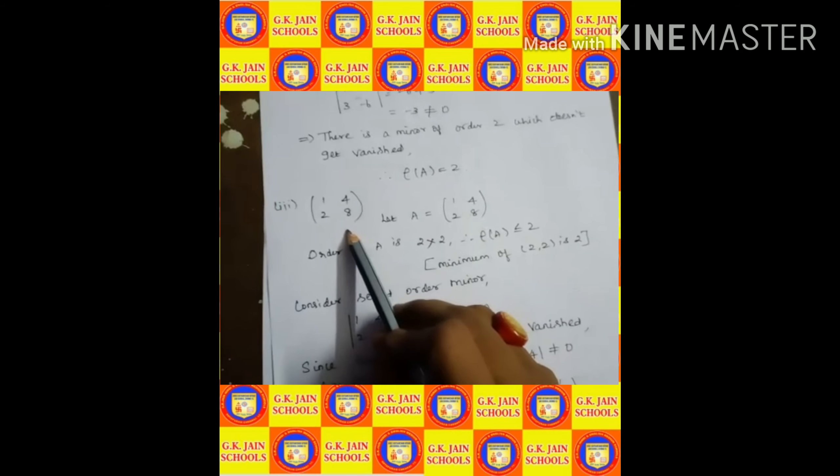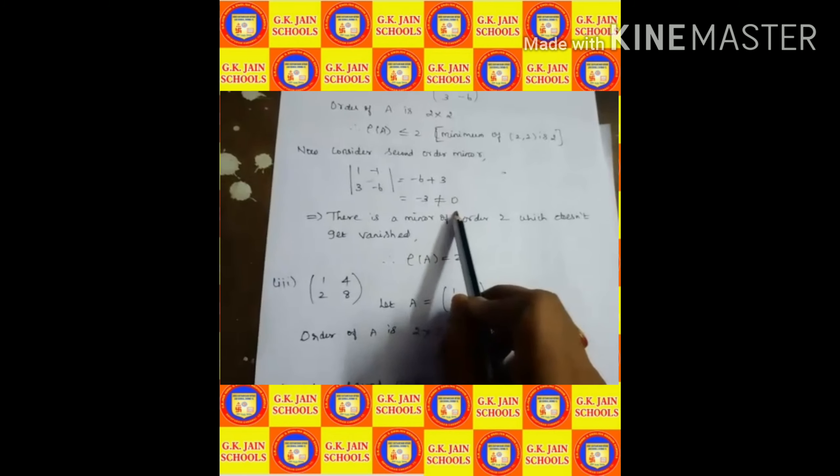Now the third subdivision: matrix [1, 4; 2, 8]. Let A equal to this — it is order 2 cross 2, so rank will be either 2 or less than 2. The second order minor: 8 times 1 is 8, minus 4 times 2 is 8, giving 8 minus 8 equals 0. Since the second order minor got vanished, we consider the first order minor, which is just the individual elements — they are all non-zero. Therefore rank of A is 1.